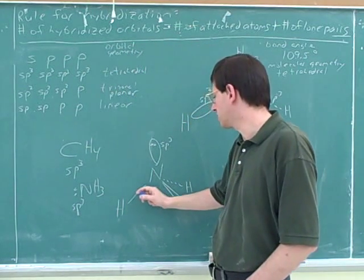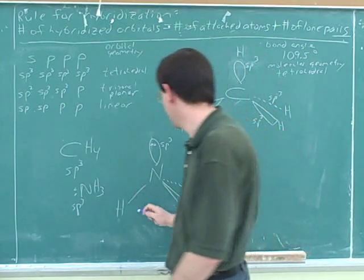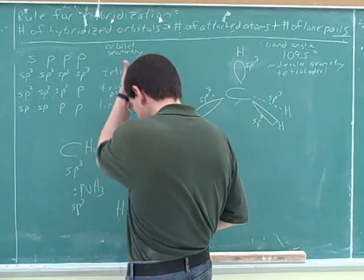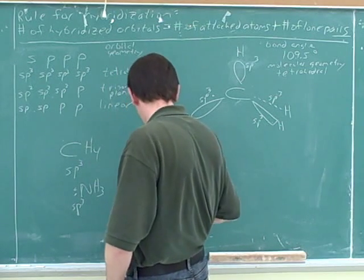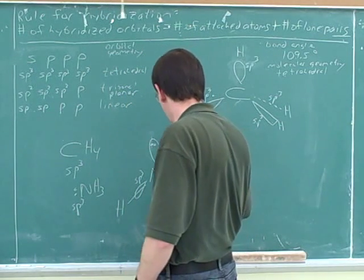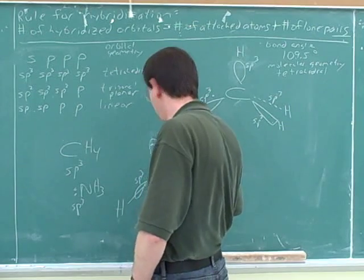What type of orbital is the nitrogen using over here? SP3. Right. And these two would also be SP3.